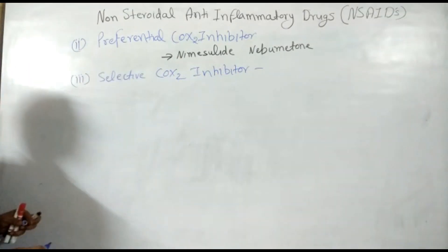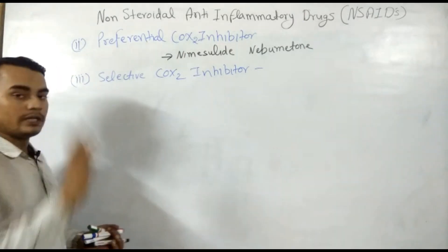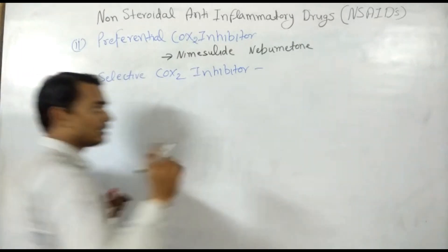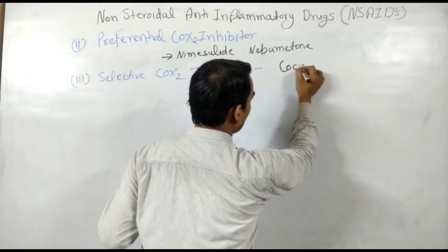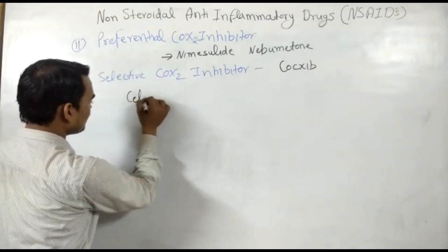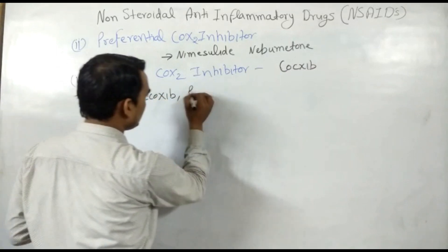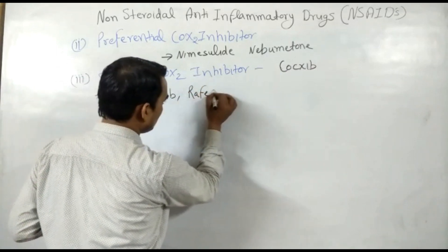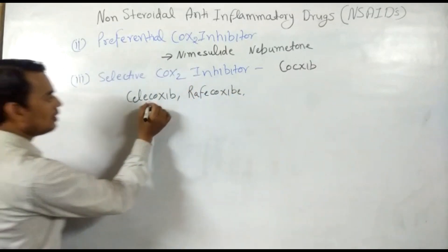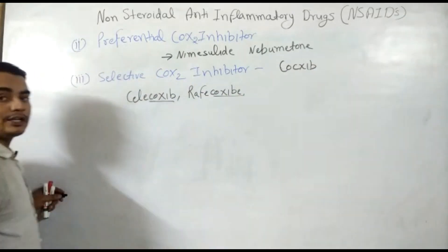The next class is selective COX-2 inhibitor. Selective COX-2 inhibitors only act on the COX-2 enzyme. All the drugs in this class are named with 'coxib' — like celecoxib and rofecoxib. So these have 'coxib' in their name, and that is the identification that these drugs are selective COX-2 inhibitors.